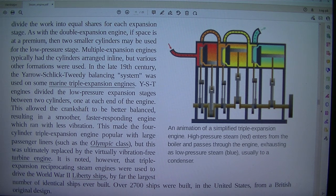As with the double expansion engine, if space is at a premium, then two smaller cylinders may be used for the low pressure stage. Multiple expansion engines typically had the cylinders arranged in line but various other formations were used.